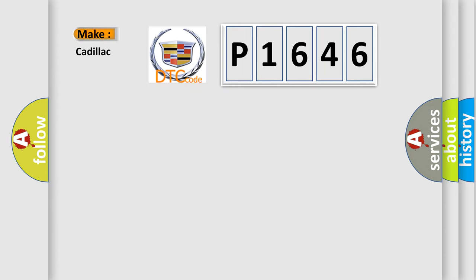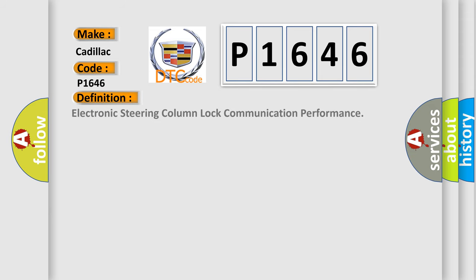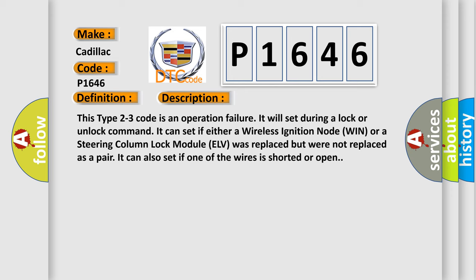So, what does the diagnostic trouble code P1646 interpret specifically for Cadillac? The basic definition is: Electronic Steering Column Lock Communication Performance. This type 2-2-3 code is an operation failure. It will set during a lock or unlock command. It can set if either a Wireless Ignition Node (WIN) or a Steering Column Lock Module (ELV) was replaced, but were not replaced as a pair. It can also set if one of the wires is shorted or open.